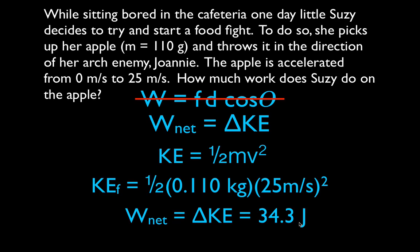So if Susie changed the apple's kinetic energy by 34.3 joules, that means she also did 34.3 joules of work on the apple, because they're equal to each other. That's the work-energy theorem: the net work is equal to the change in kinetic energy.